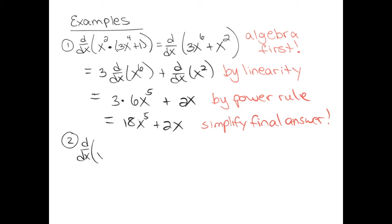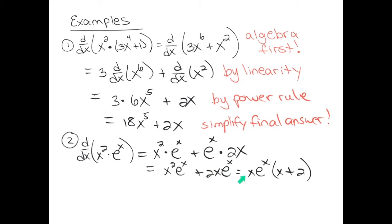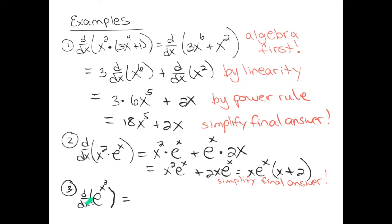Let's do another example: the derivative of x squared times e to the x. These are multiplied, so we should use the product rule. 1d2 is the derivative of the second function — the derivative of e to the x is e to the x. That's my 1d2 part, and then plus 2d1. D1 is the derivative of x squared, giving me 2x. Now let's do the derivative of e raised to the x squared power. This is a composition — not multiplication. It's the exponential with x squared composed inside. This is the chain rule: the derivative of the e function is e, copy down the inside function, then multiply times the derivative of the inside function. Here's our answer.